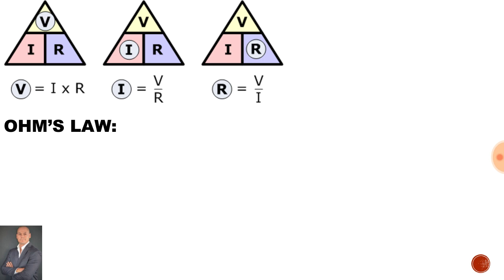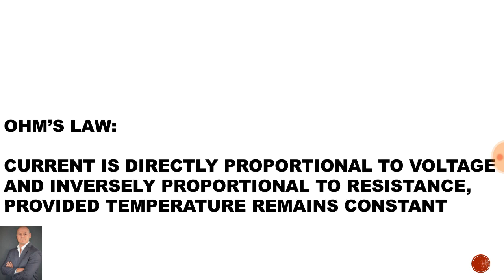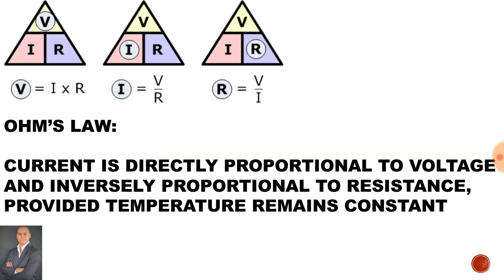In order to do the calculations coming up, we need to know Ohm's law, which states that current is directly proportional to voltage and inversely proportional to resistance, provided temperature remains constant. Therefore, using Ohm's law: V is equal to I times R, I is equal to V over R, and R is equal to V over I.